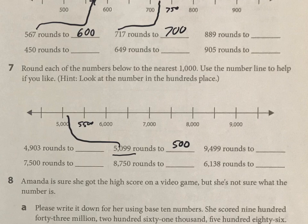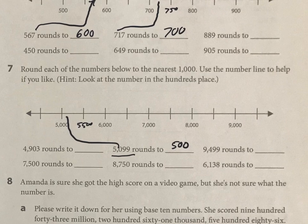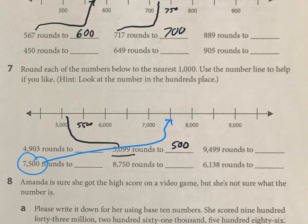The tricky one here would be 7,500, because it's right in the middle. That's exactly in the middle, and if it's right in the middle you round it up, so that would round to 8,000. You can draw little arrows if you want to — imagine where these would be on these number lines, and that will help you visualize where to round them.